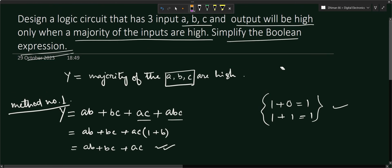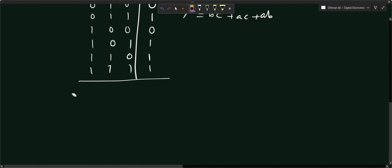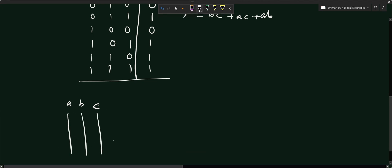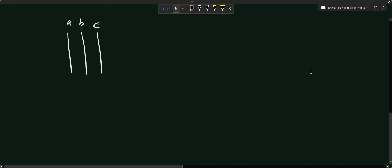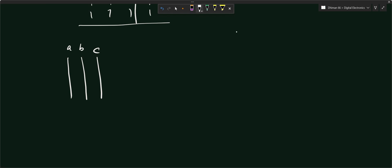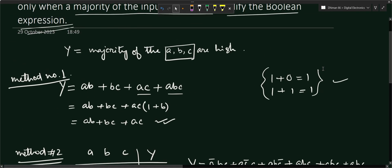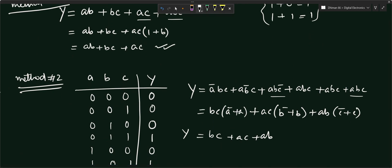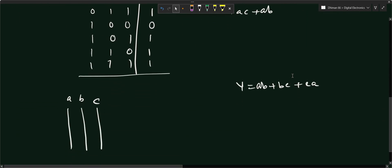Both methods give the same result: Y = AB + BC + CA. Now we design the logic circuit using AND gates and OR gates with the three inputs A, B, and C. We can see the question asks us to simplify the boolean expression and design the logic circuit.